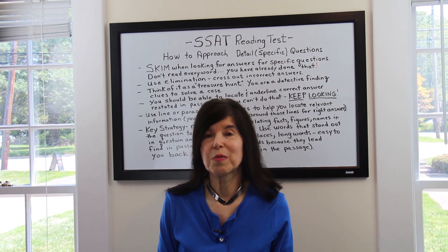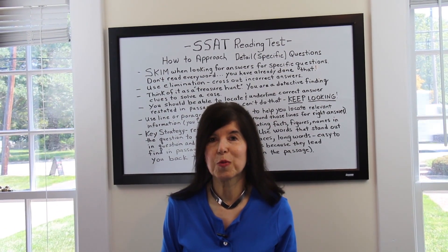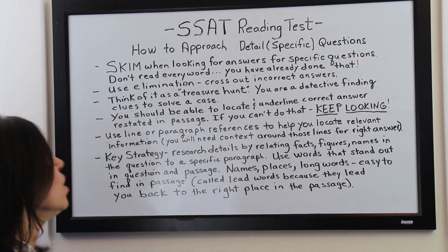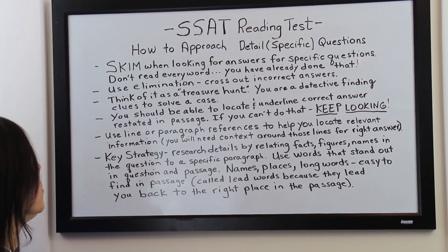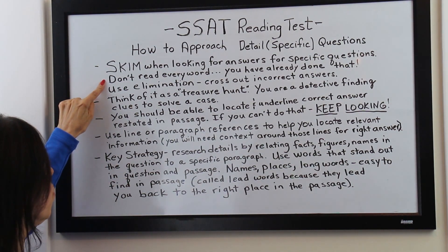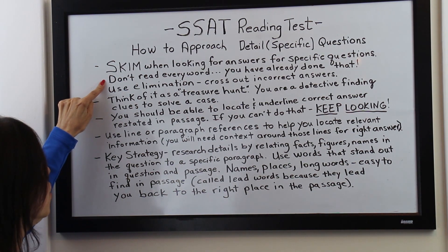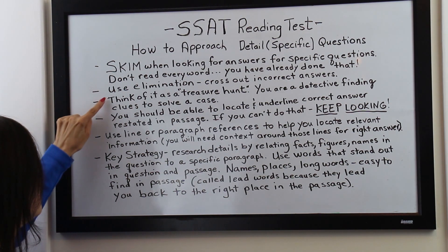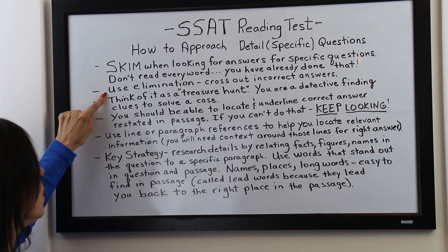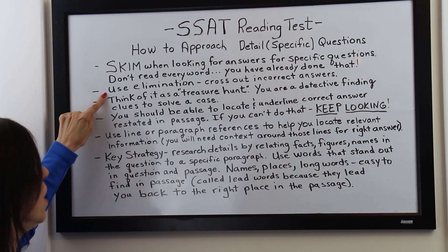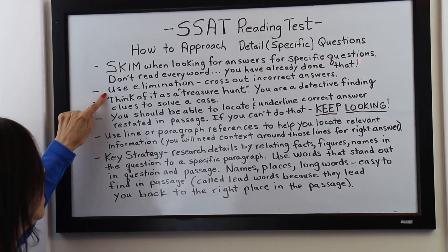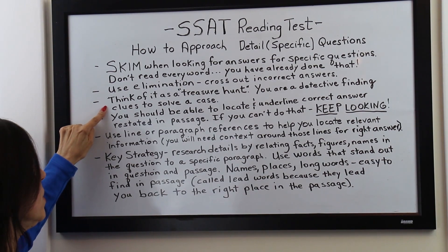Now I'd like to show you some tips on how to approach detail or specific questions that will really help you. First, you want to skim when looking for answers to specific questions. Remember, don't read every word — you have already done that when you read the passage the first time. This one's very important: use elimination, or ruling out. Cross out incorrect answers that are obvious right away; it really helps to narrow down your choices. Think of it as a treasure hunt — you're a detective finding clues to solve a case back in the passage.